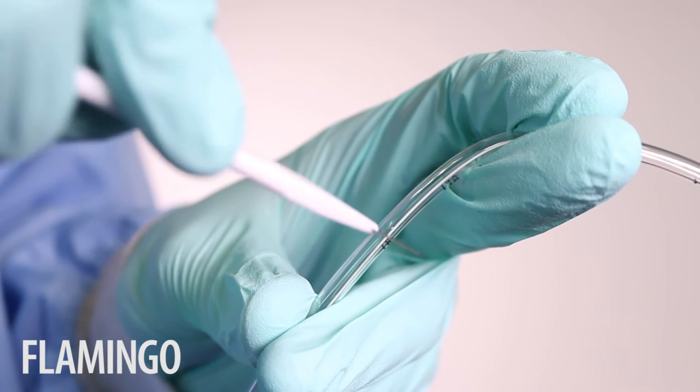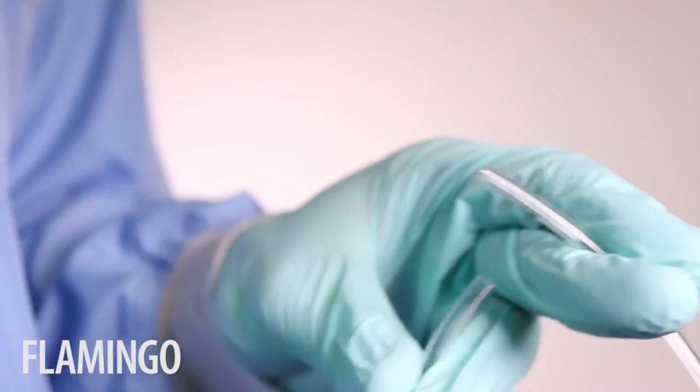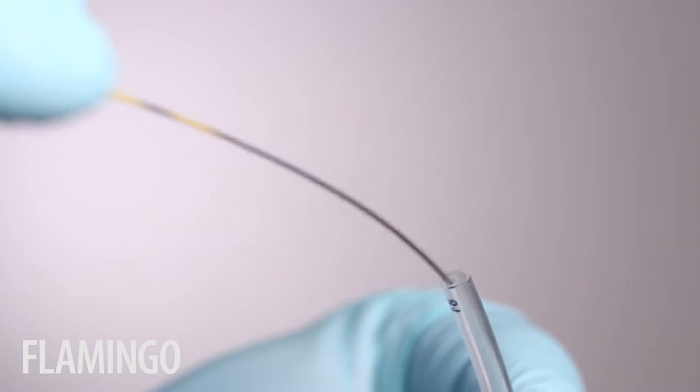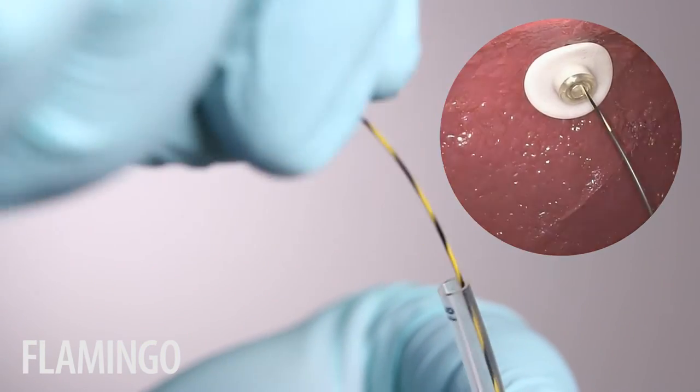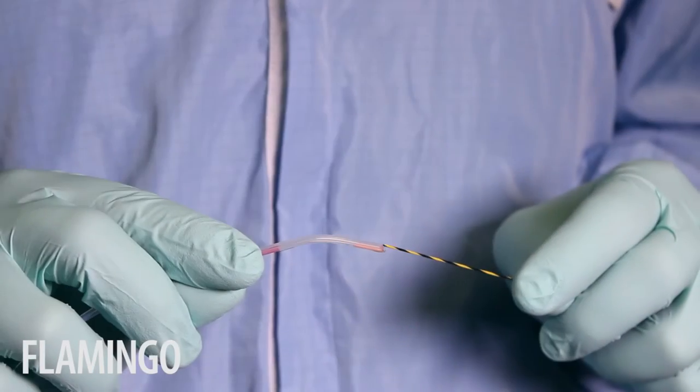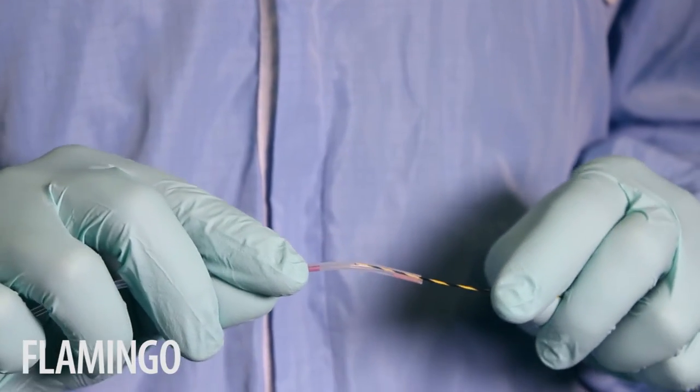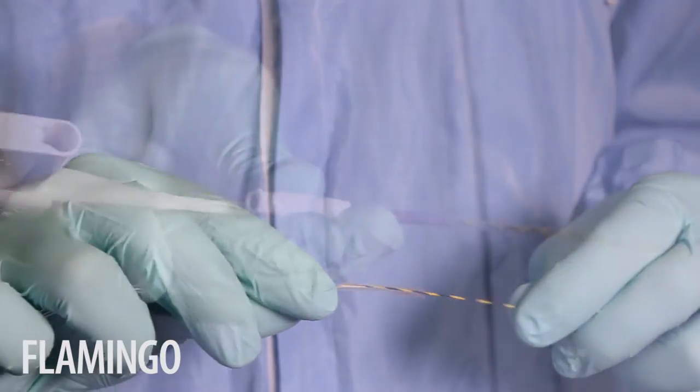Cut through the peg tube leaving between 3 and 5 centimeters of the tube protruding outside the patient. Now insert the guide wire via the peg tube into the stomach. The lumen of the Flamingo can easily be inserted over the guide wire and into the stomach.